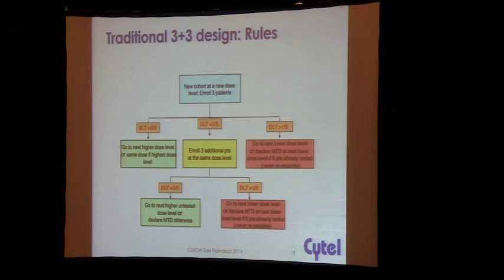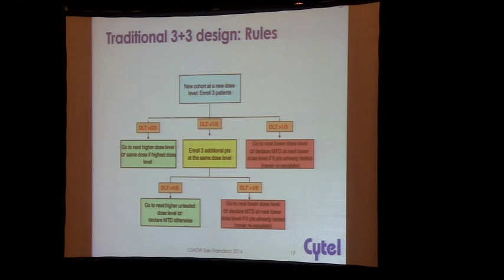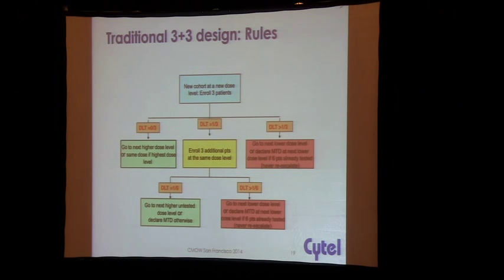You enroll three patients. If you see no DLT, you escalate to the next dose. If you see one DLT, you expand the cohort — you add another three patients. If you see one out of six DLTs, you can escalate again. If you see more than one DLT out of three or out of six, you de-escalate. At the point where you de-escalate, you're basically ready to declare an MTD if you've already studied six patients, after which most people do a dose expansion to study more patients at that dose.